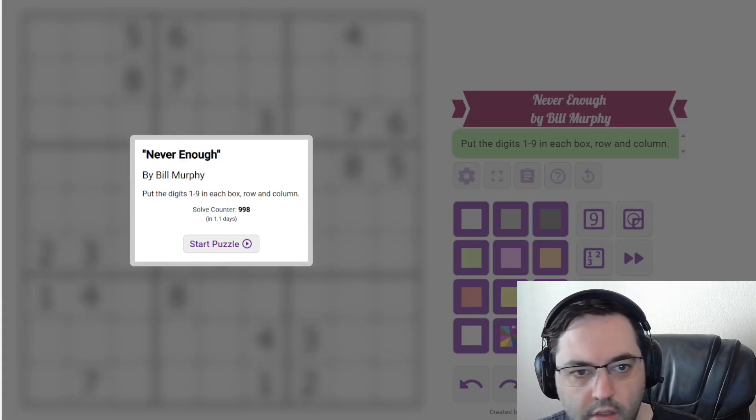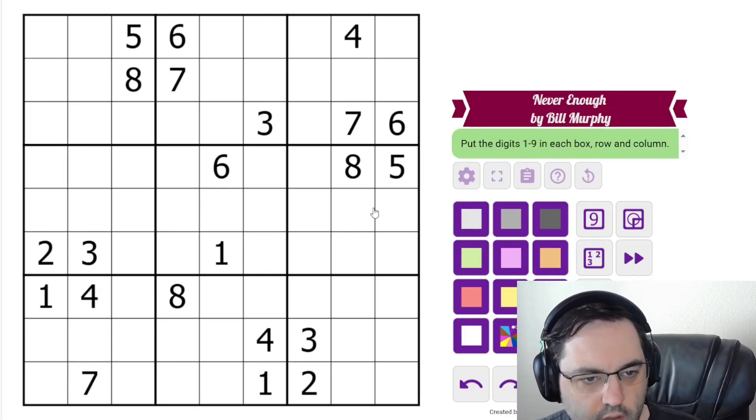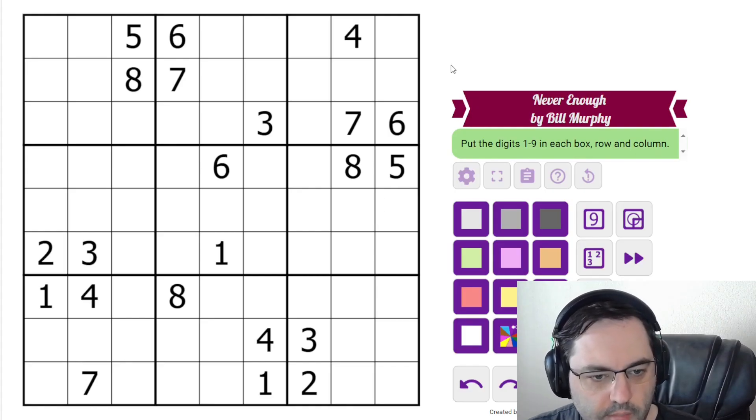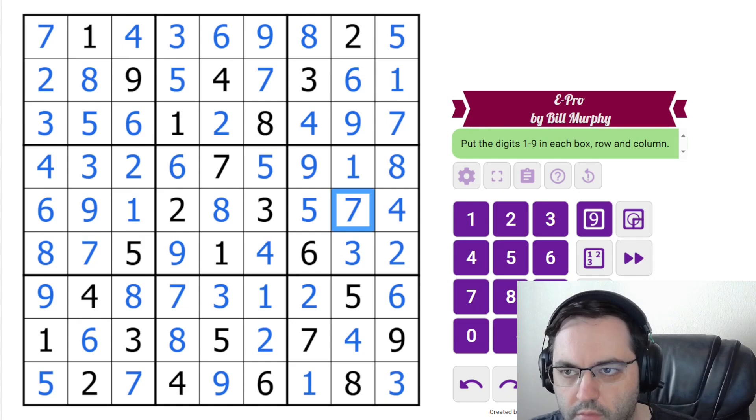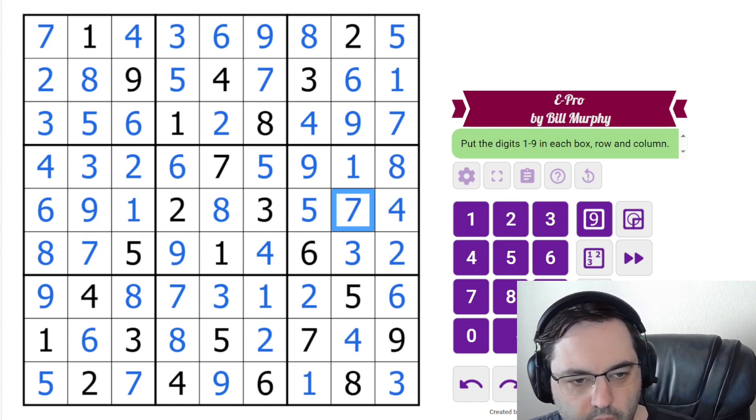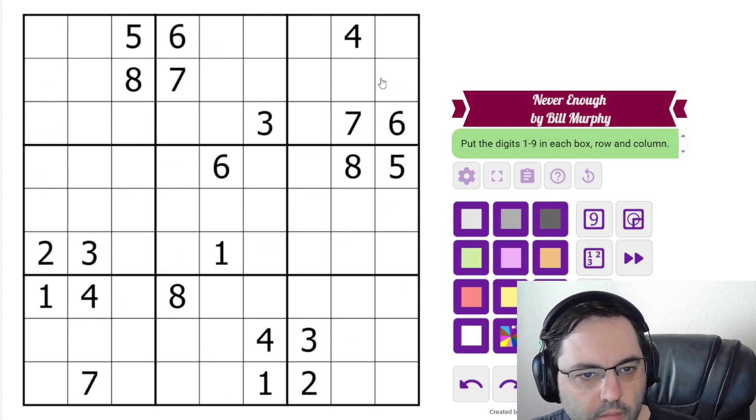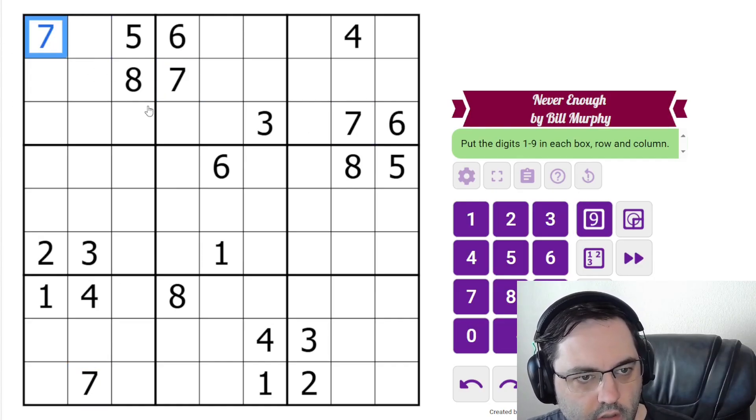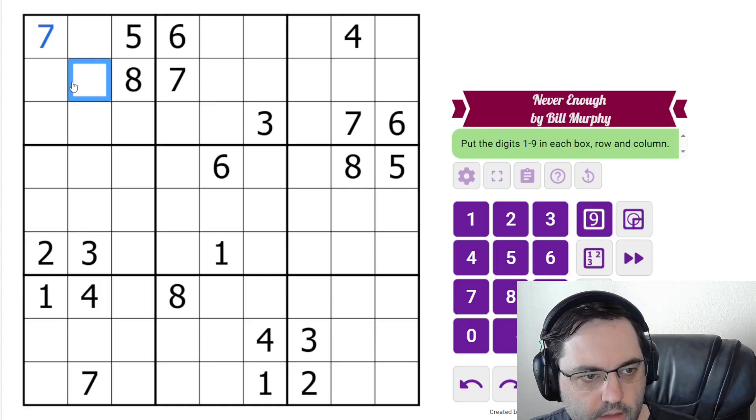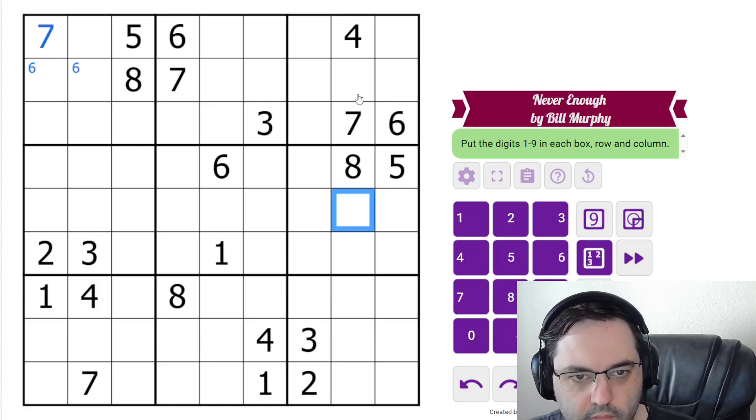The second one is Never Enough, and very different looking puzzle. This one's rotationally symmetric, whereas the other one was vertically symmetric. So let's see here. 6 needs to go here. 7 needs to go in one of these, and we have the 7 here. Let's go ahead and mark the 6s. We don't necessarily need to.